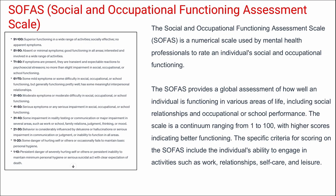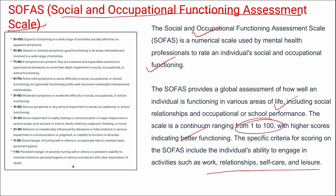Next is SOFAS — the Social and Occupational Functioning Assessment Scale — a numerical scale used by mental health professionals to rate an individual's social and occupational functioning. It provides a global assessment of functioning in areas including social relationships and occupational or school performance. The scale is a continuum from 1 to 100, with higher scores indicating better functioning, based on the individual's ability to engage in work, relationships, self-care, and leisure.